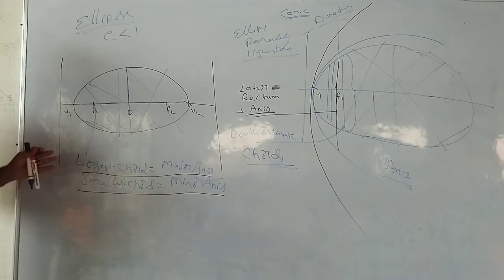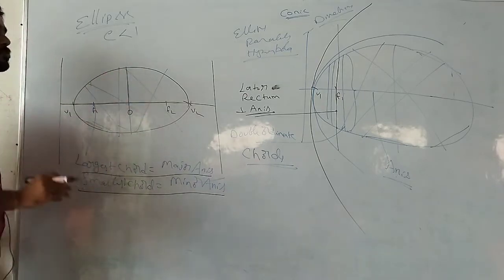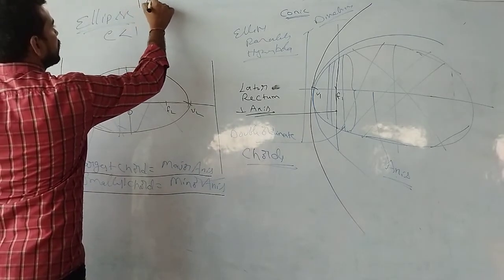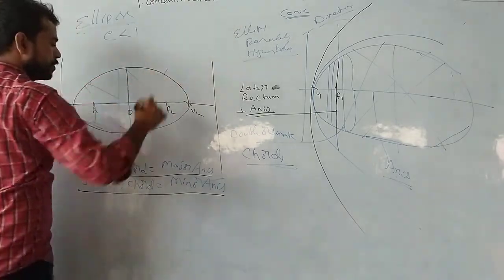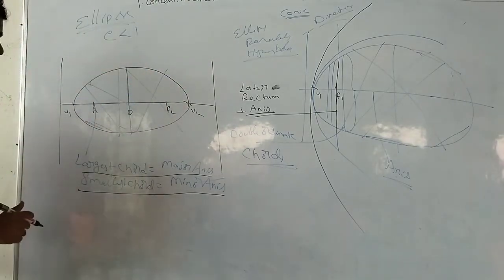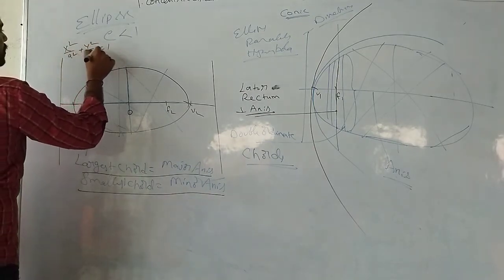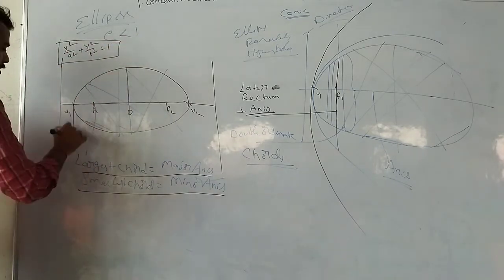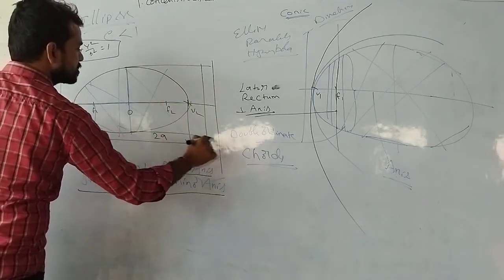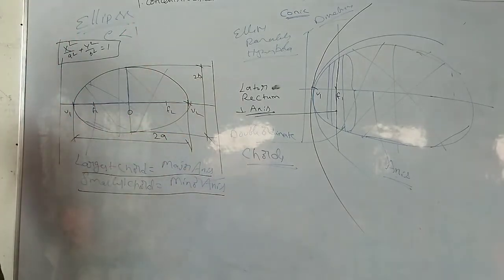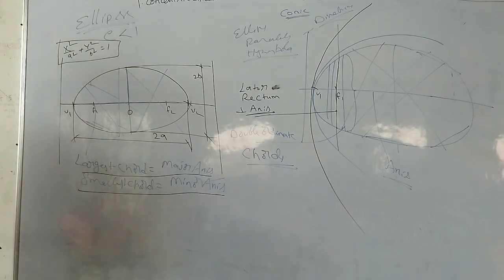And if you draw the perpendicular chord, you will get the minimum chord — the smallest chord — which is nothing but the minor axis. To draw a circle you only need a compass, but to draw an ellipse there are different methods. The first one is the concentric circles method.